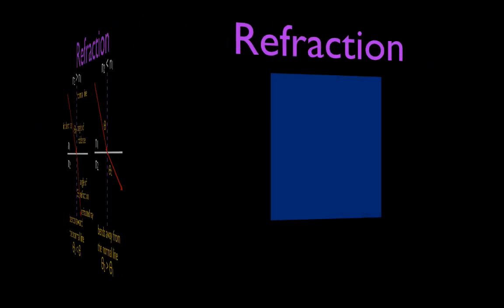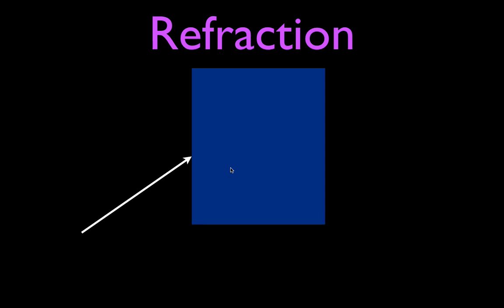Let's look at a couple of conceptual examples. Here is a prism — we'll assume it's plastic or glass. On the outside we have air, on the inside we have plastic or glass. Glass has a higher index of refraction than air, which is 1; glass is about 1.5. Here's a light ray striking that boundary. Before you even think about it, go ahead and draw the normal line so you have that picture in your head.